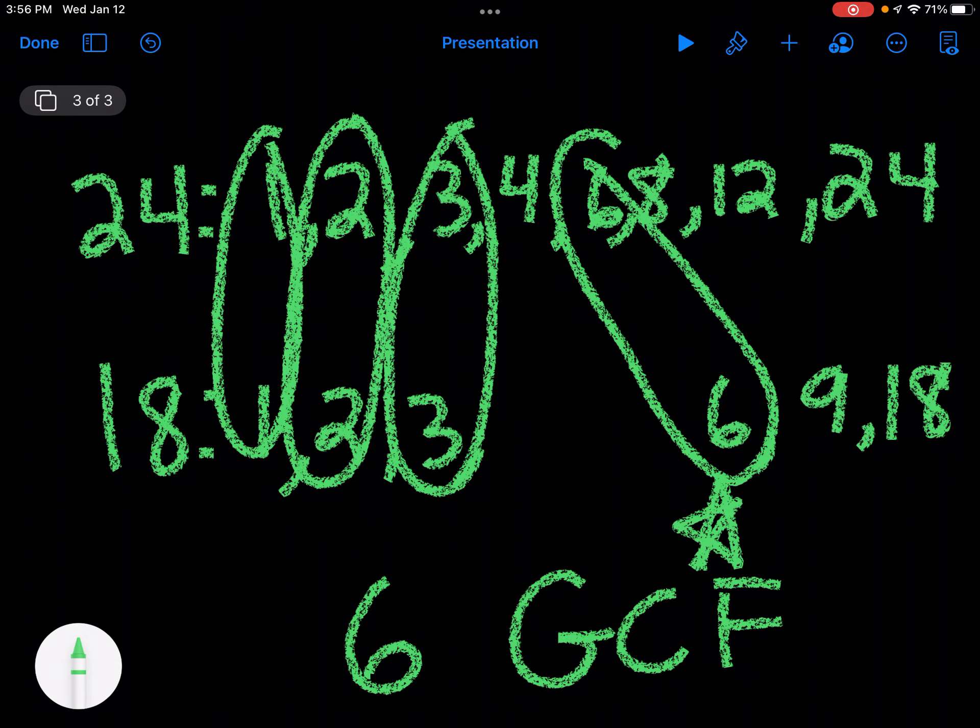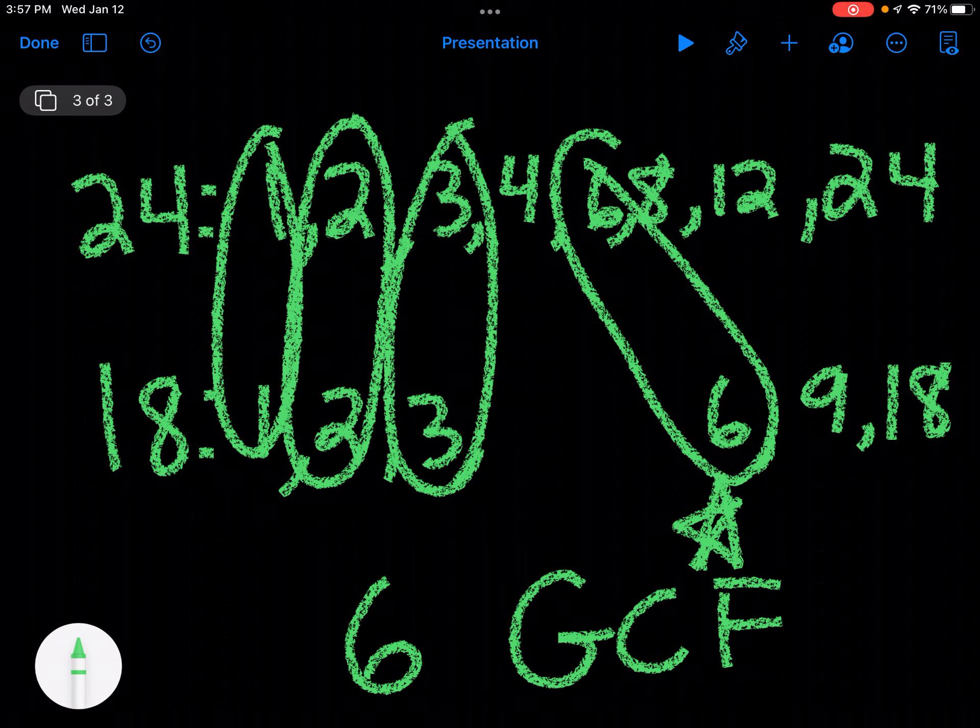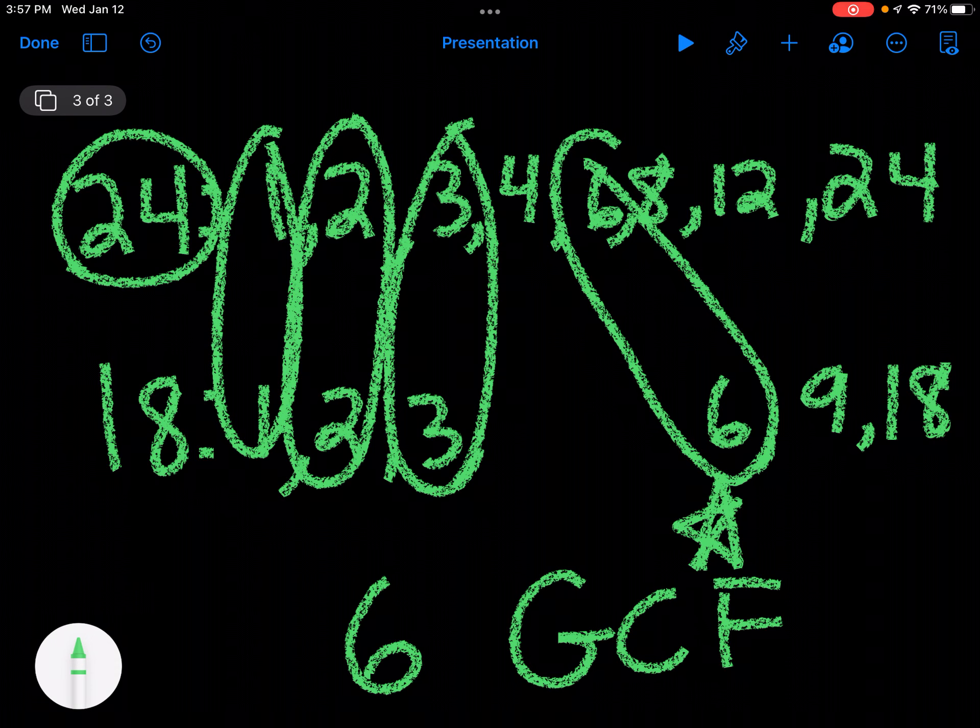So greatest common factor is the number of factors, which are numbers that you multiply together to get a number. A multiple is when I would say like 24, 48, 72, 96. It's when I'm counting by that number.